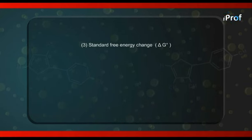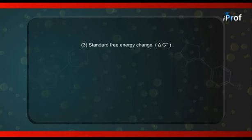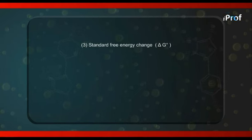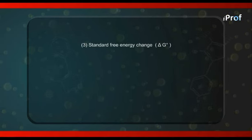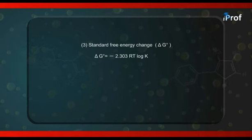Standard state for any substance means its concentration should be unity — one mole per liter. If the substance is in the gaseous state, its standard state means its pressure should be unity — one atmosphere or one bar as the case may be. When things are taken in the standard state, the change in free energy is called ΔG°. This ΔG° is related to the equilibrium constant by the formula: ΔG° = −2.303 RT log K, where K is the equilibrium constant for the reaction.